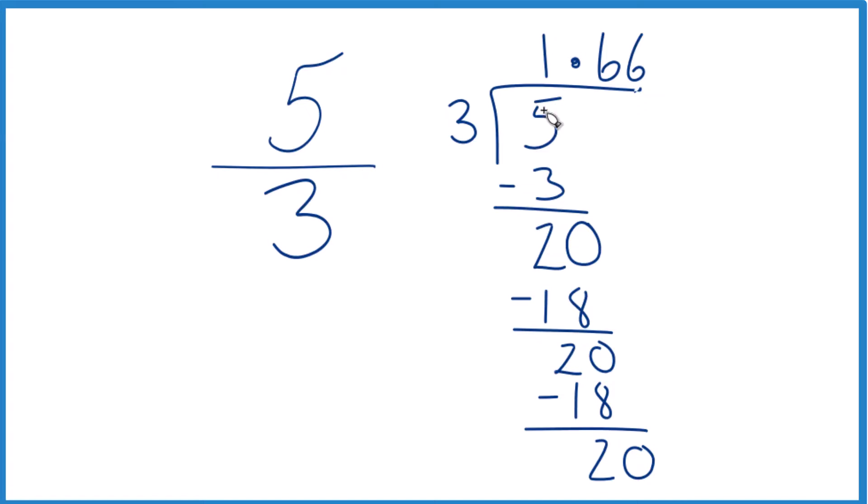So we could say that 5 thirds, the fraction, that's equal to the decimal 1.6, and the 6 keeps repeating, we could just put a bar over it and call it 1.6 repeating. You might round it to 1.67, but this is probably a more accurate way to write it.